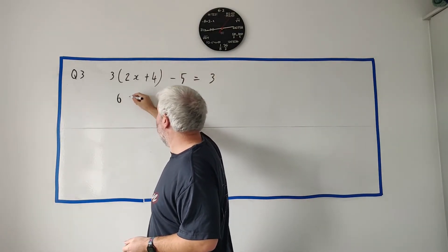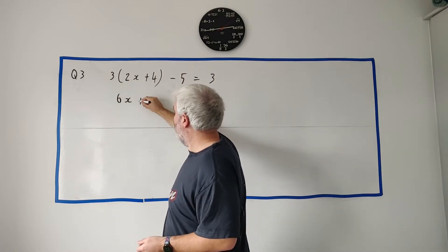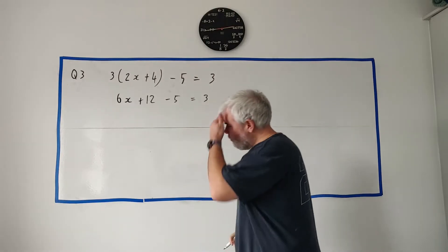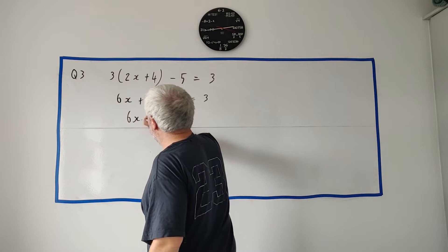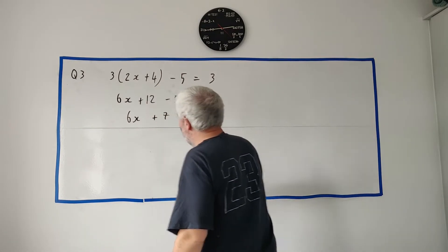Let's multiply that in. Three times two x is six x. Three times four is twelve minus five equals three. Next thing very simply let's get these two numbers together. Six x twelve minus five is plus seven equals three.